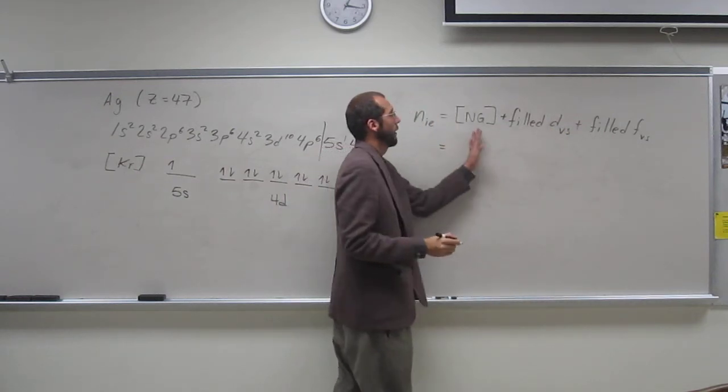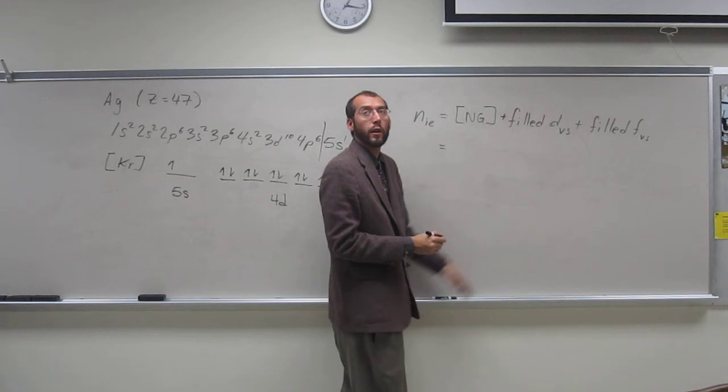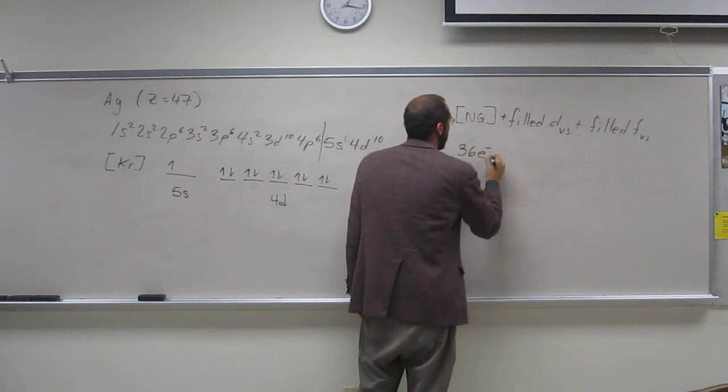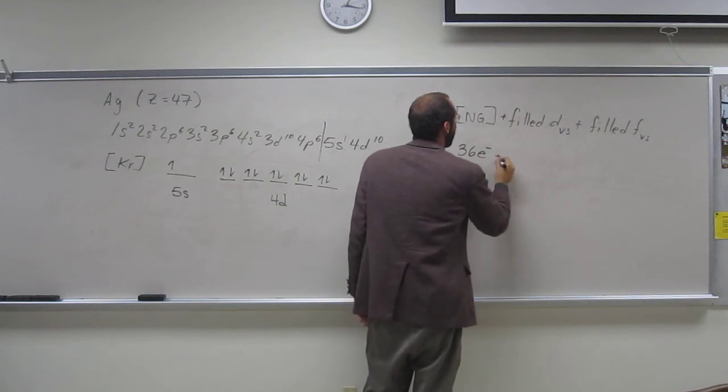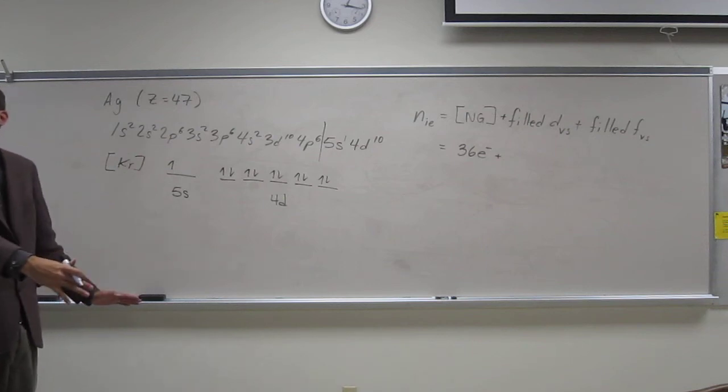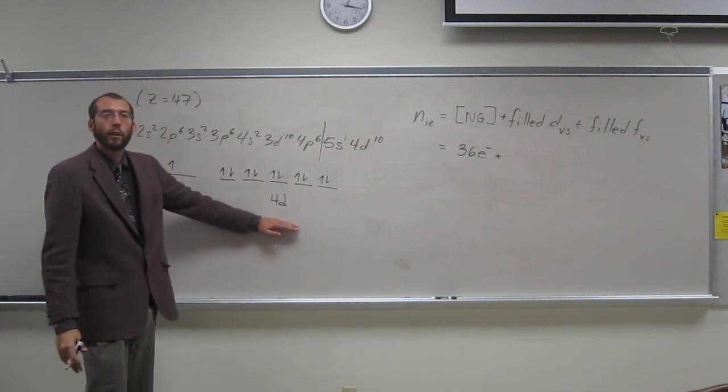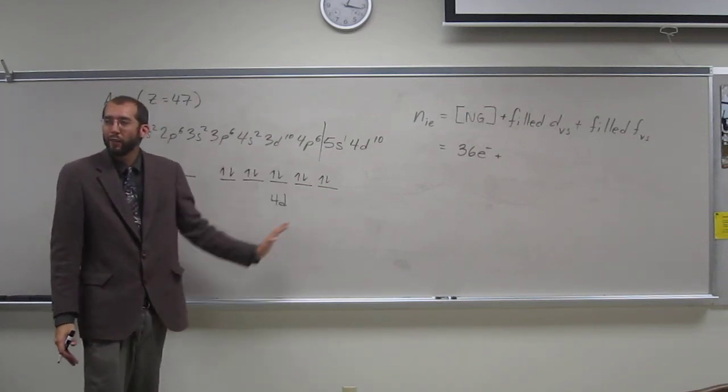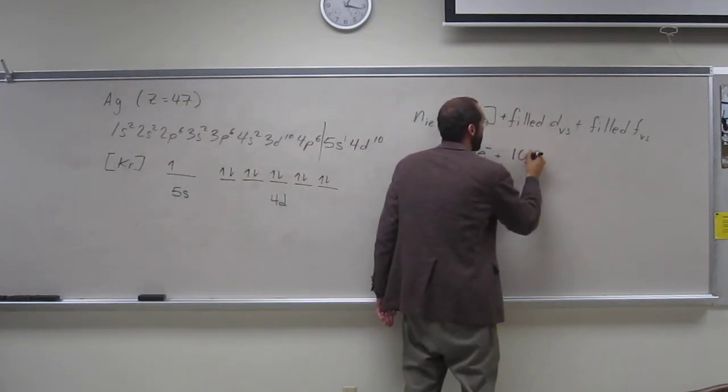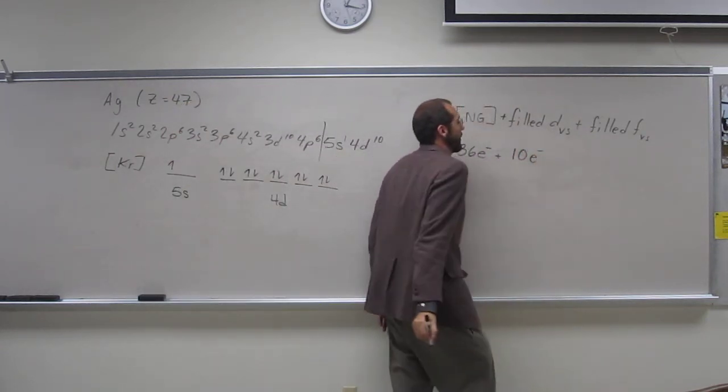Okay, so the noble gas, in this case is Krypton, and that's got 36 electrons. So in the valence shell, is there a filled d set of orbitals? Yes, this one can, so it's got all 10 of them, so it's contracted to become core electrons, so we've got 10 electrons then.